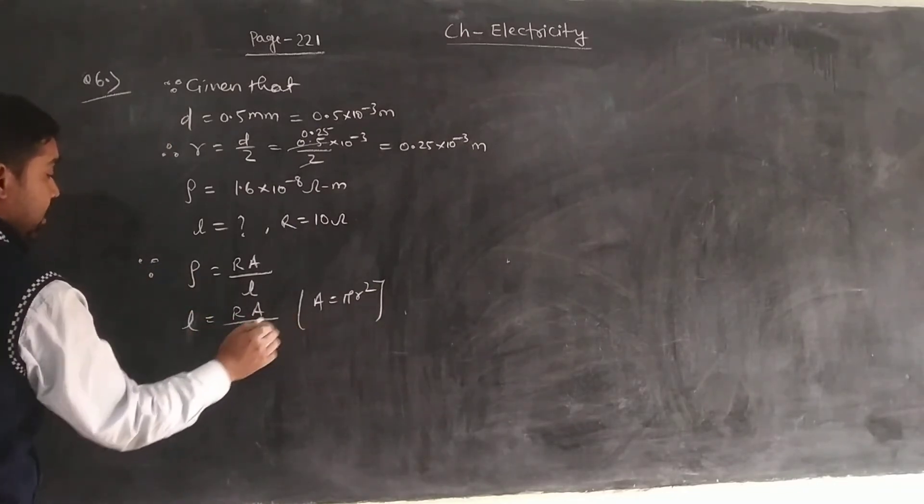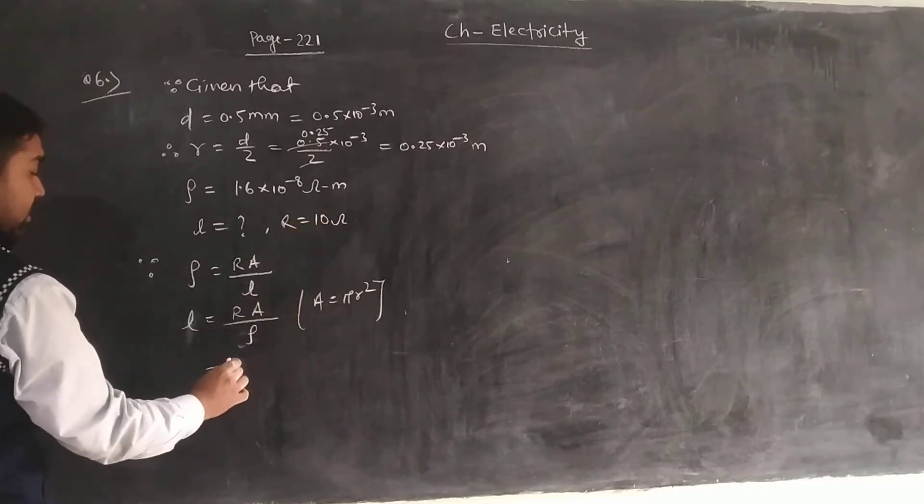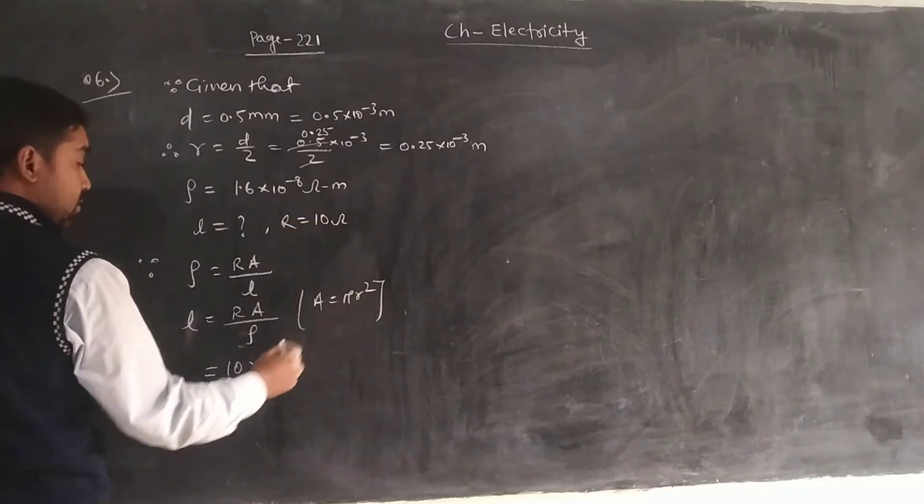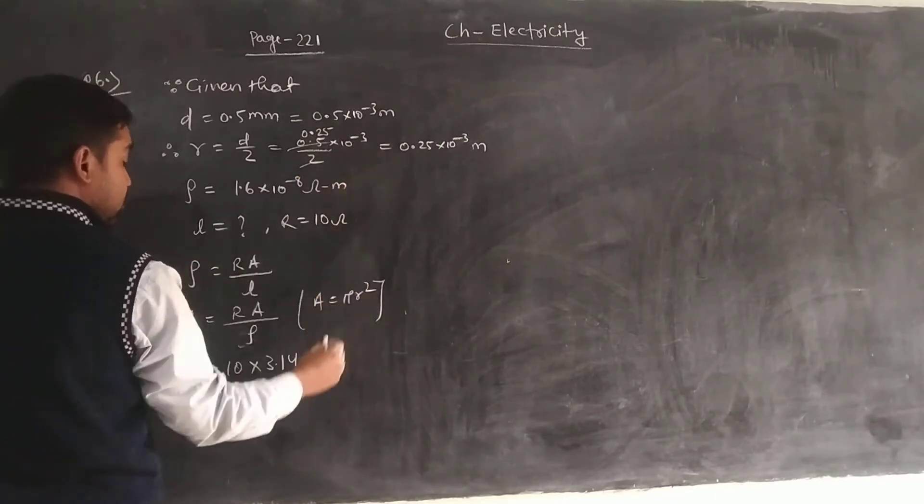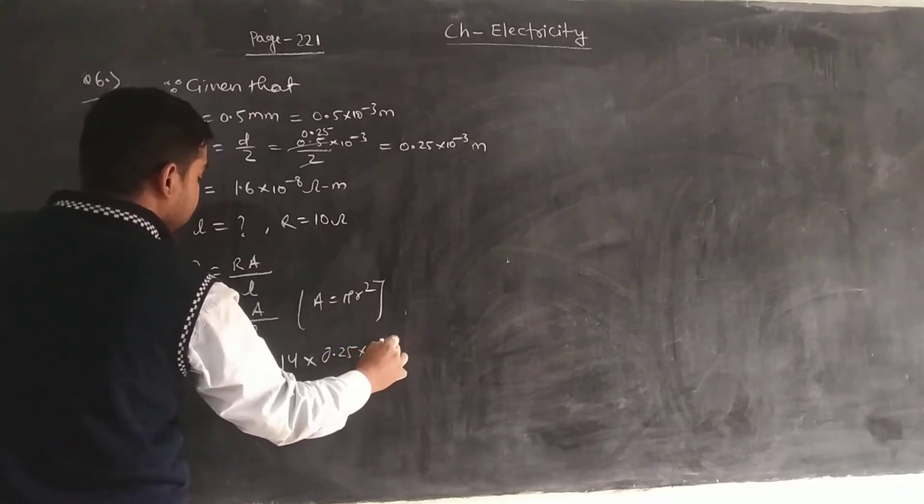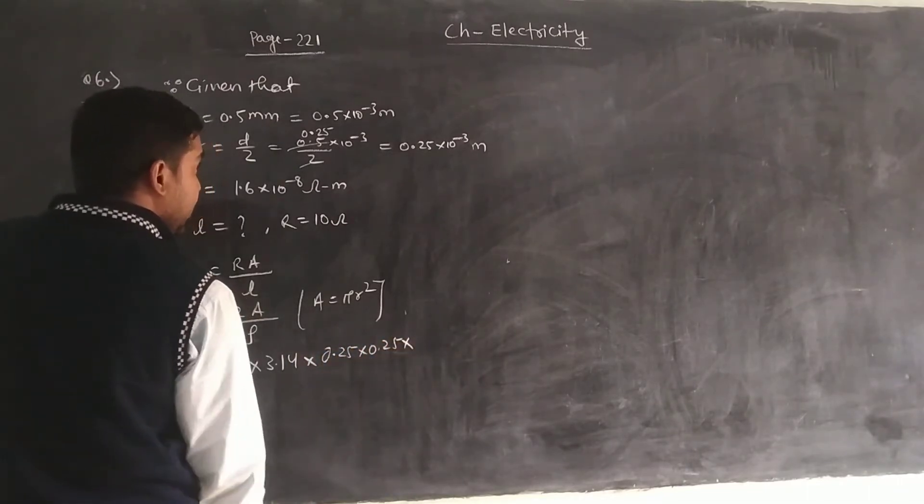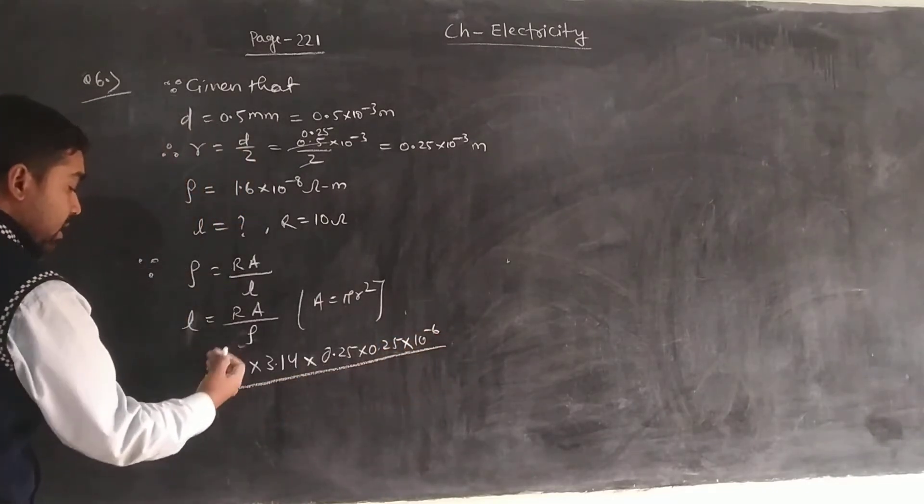L equal to, the resistance value is 10, area pi R square. Pi is 3.14, and radius is 0.25 times 10 to the power minus 3, so 0.25 into 10 to the power minus 3 times 10 to the power minus 3 gives 10 to the power minus 6.